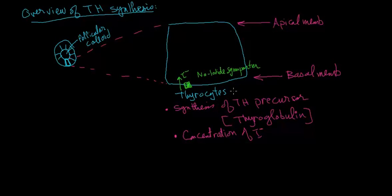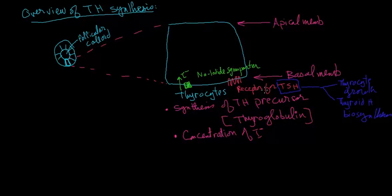Also, on the basal membrane of the thyrocytes we have a receptor for pituitary hormone called TSH, thyroid stimulating hormone. When stimulated, it promotes two things: thyrocyte growth, the growth of the cell itself, as well as thyroid hormone biosynthesis. In fact, TSH is very important for each single step of thyroid hormone biosynthesis.